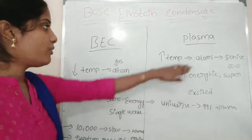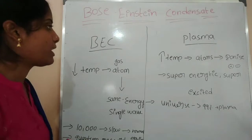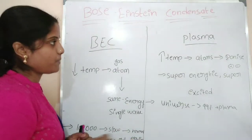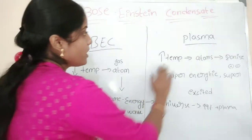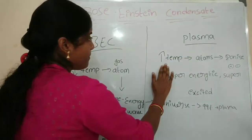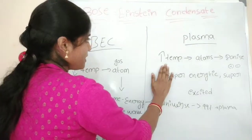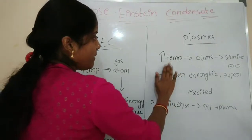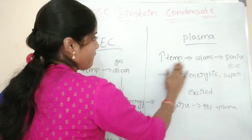Let's compare the fourth state of matter — plasma — to the fifth state of matter. In plasma, the temperature is highly increased compared to the fourth state of matter.